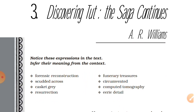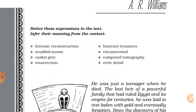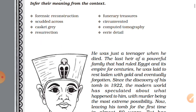Notice these expressions in the text and infer — find out their meanings from the context: forensic reconstructions, scudded across, casket gray, resurrection, funerary treasures, circumvented, computed tomography, airy detail. We will read the text and find out the meanings.